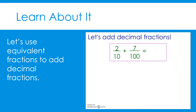Let's add two-tenths plus seven-hundredths using equivalent fractions. First, let's estimate. Will our sum be less than one-half, equal to one-half, or greater than one-half? I know that two-tenths is less than one-half, and seven-hundredths is very small and a lot less than one-half. So I estimate that our sum will be less than one-half.